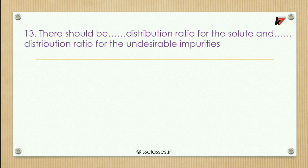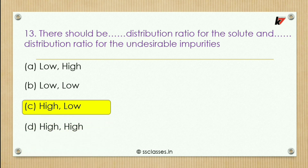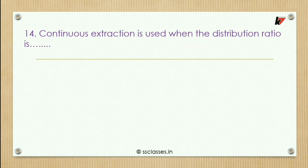Thirteenth question: there should be what distribution ratio for solute and what for undesirable impurities? Options: low and high, low and low, high and low, or high and high. The correct answer is high and low — high distribution ratio for the solute and low for the undesirable impurities.